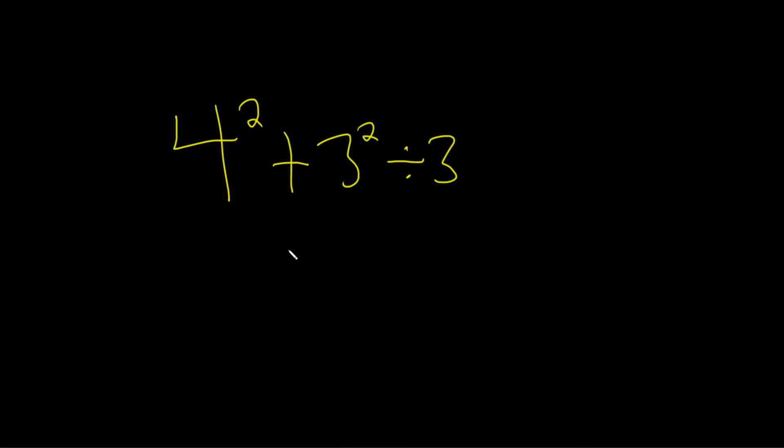In this problem we have to simplify this number expression. So the rule for number expressions is you're first supposed to do all the multiplication and division and you work left to right. Then you do the addition and subtraction.